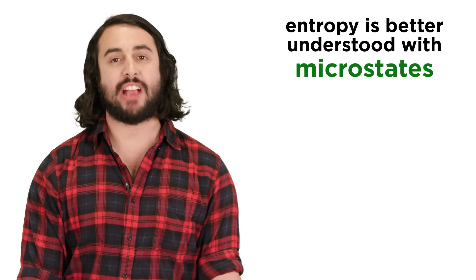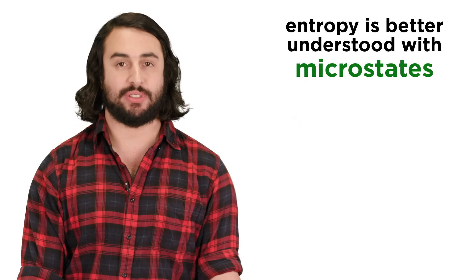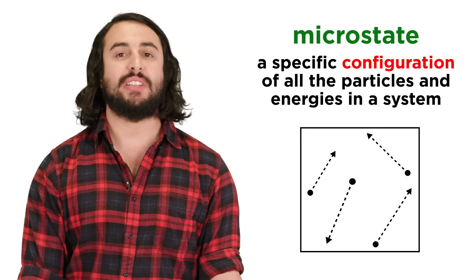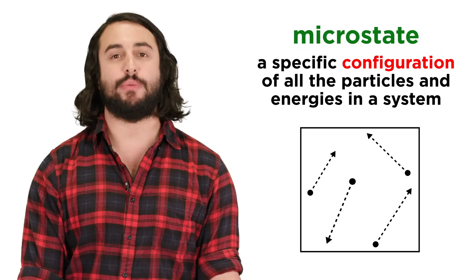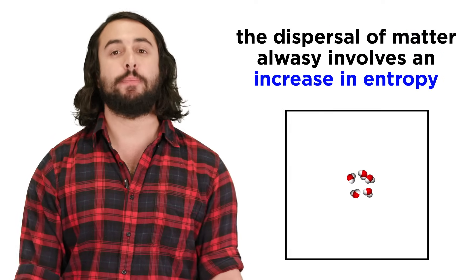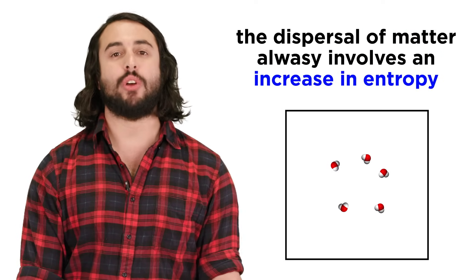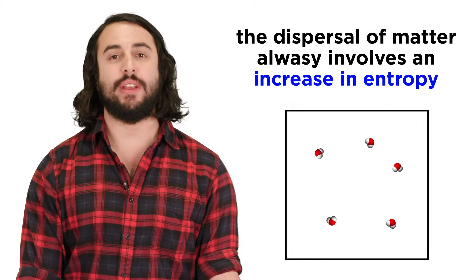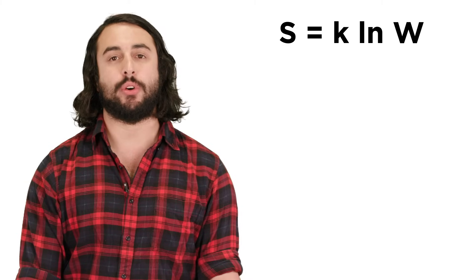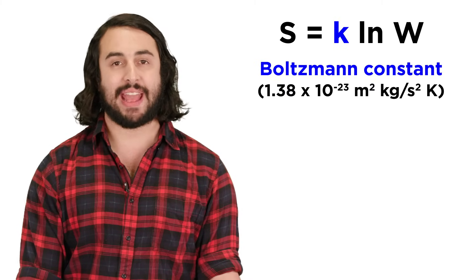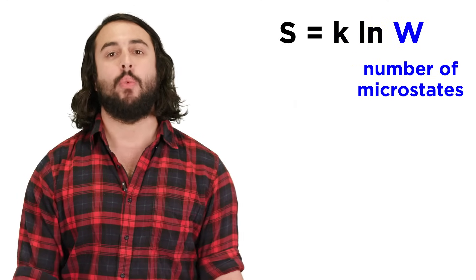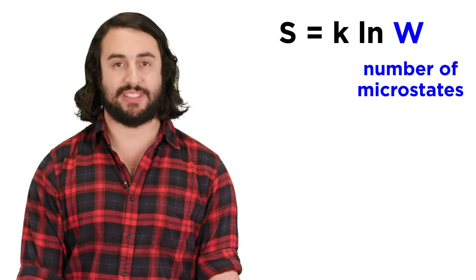Entropy can be rationalized if we examine the concept of microstates, introduced by Ludwig Boltzmann. A microstate is simply a specific configuration of all the particles and energies in a system. The dispersal of matter and energy, which is always accompanied by an increase in entropy, will tend to be spontaneous. Things move towards more disorder because of this equation, where S equals k, the Boltzmann constant, times the natural log of W, where W is the number of microstates possible for a system.